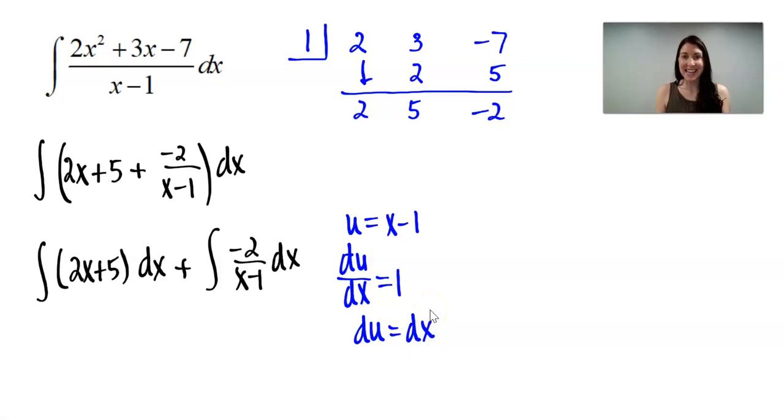So now I can rewrite that second integral using u. The first one I'll just leave the same, and the second integral I'm going to rewrite as negative 2 divided by u du. So I can integrate in terms of u.